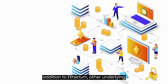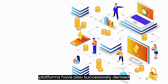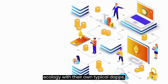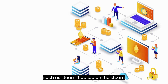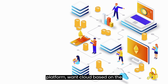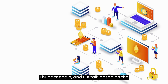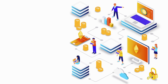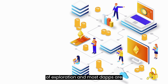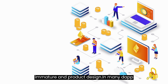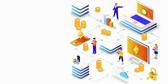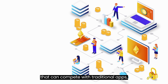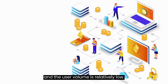In addition to Ethereum, other underlying platforms have also successively derived their own distinctive application ecology, with their own typical DApps, such as Steemit based on the Steam platform, Wank Cloud based on the Thunder chain, and GxTalk based on the GxChain. DApps based on blockchain technology are still in the early stage of exploration, and most DApps are immature in product design. In many DApp ecosystems, there is no explosive DApp that can compete with traditional apps, and the user volume is relatively low.